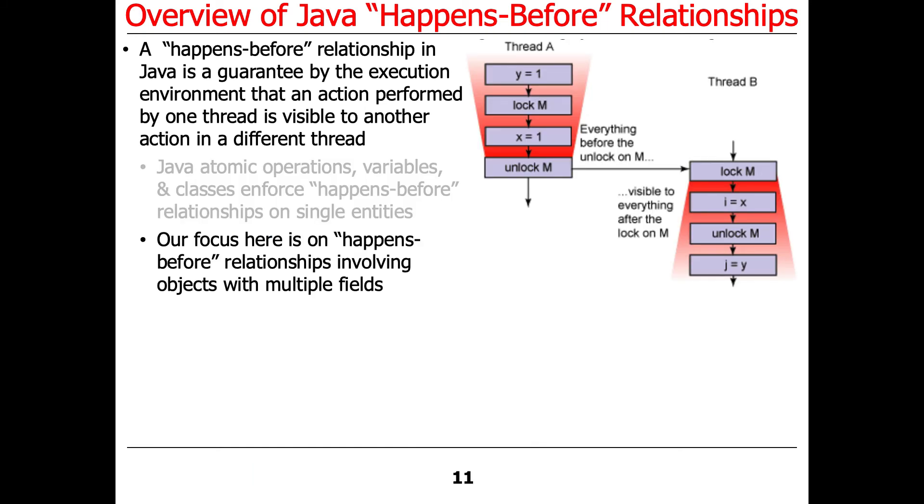What's most interesting in this discussion we're about to have are atomic operations or happens-before relationships on objects that contain multiple fields because that's where it really starts to matter because you don't want to have things inconsistent. Here's an example. This is very similar to what we looked at a few minutes ago. We come along in thread A. Let's assume for sake of argument that Y and X are fields that are visible to both threads, and we've got a lock M, which is also visible to both threads. So thread A comes along. It sets Y to 1. It acquires the lock. And then it sets X to 1. And then it unlocks the lock.